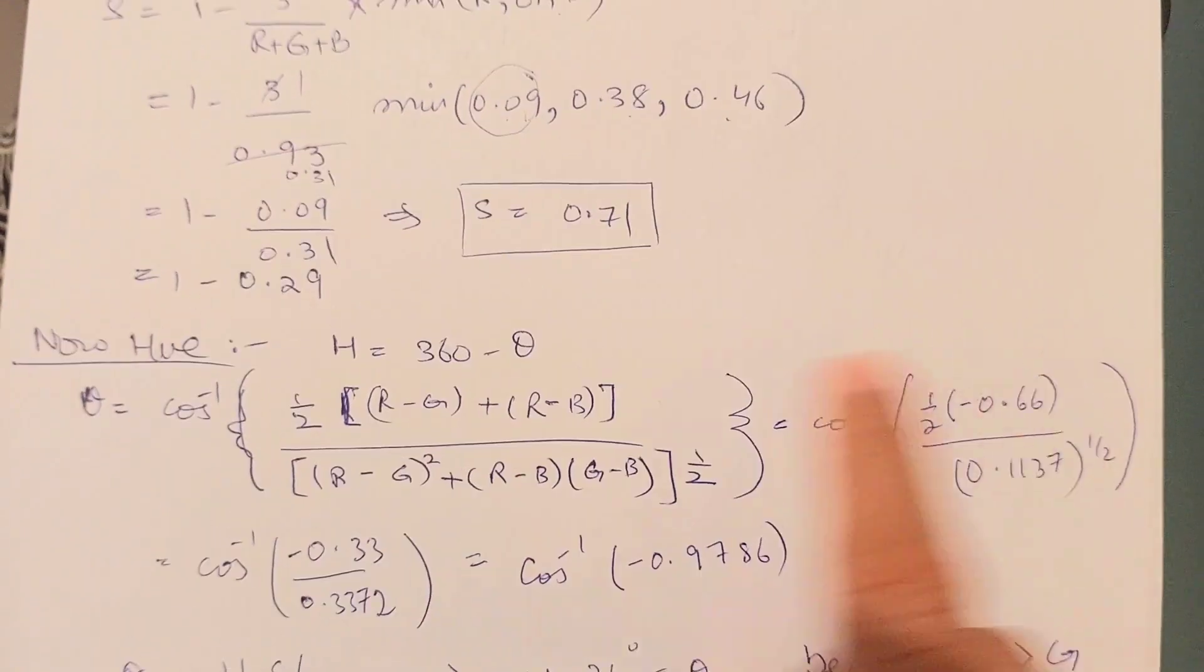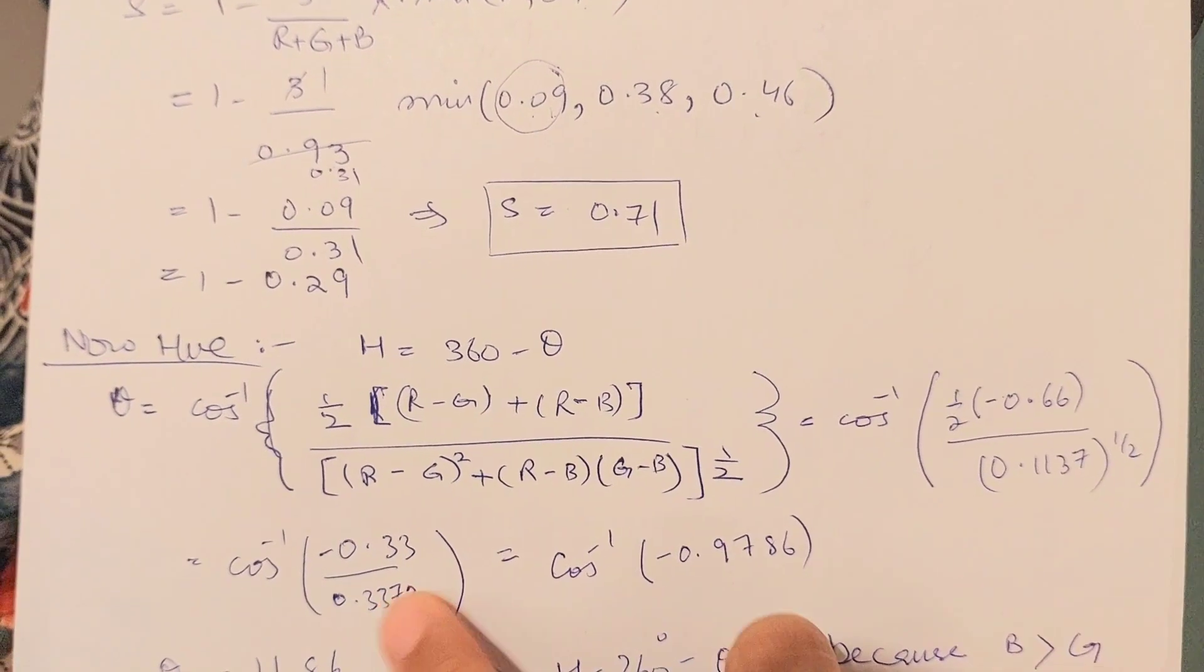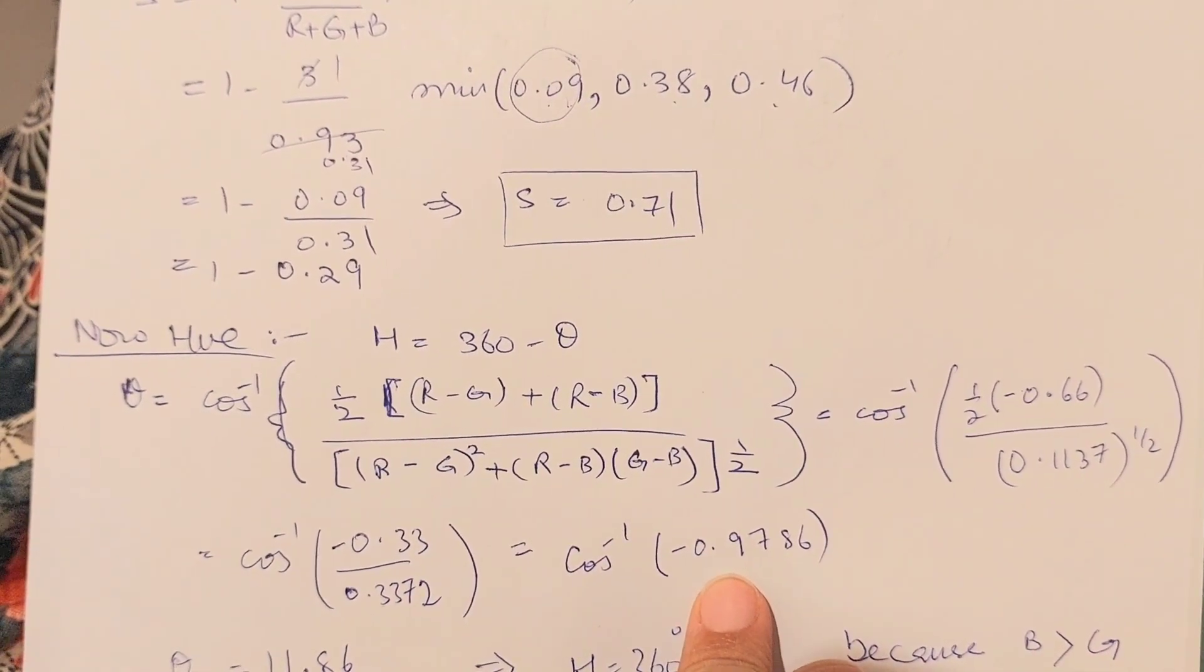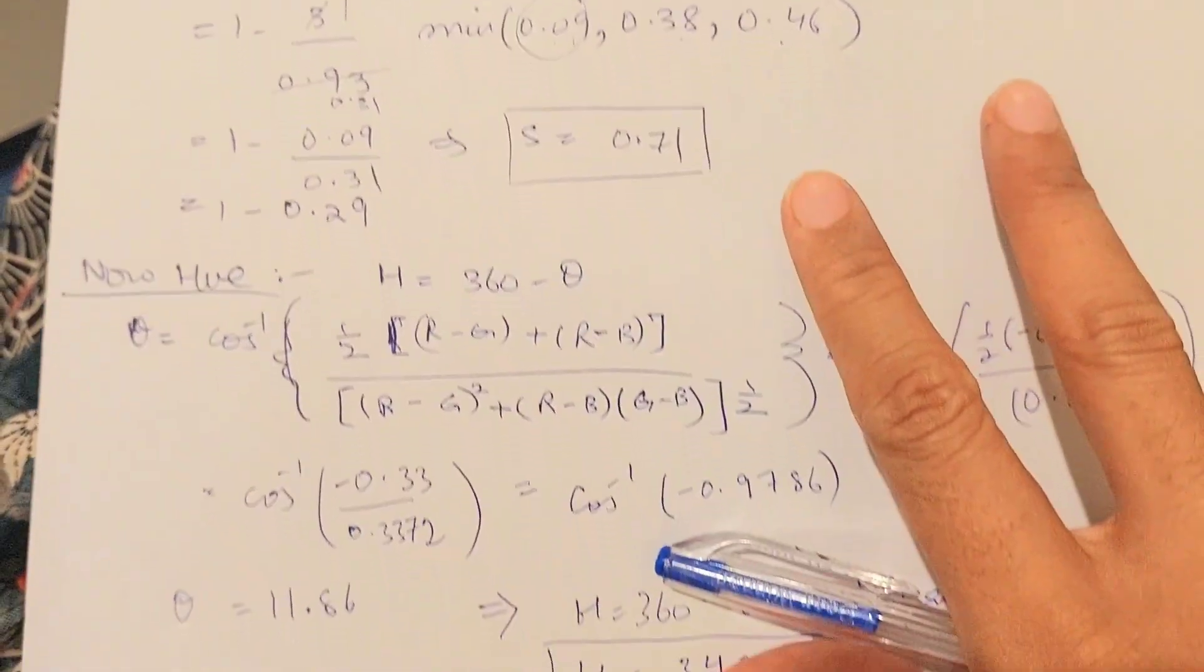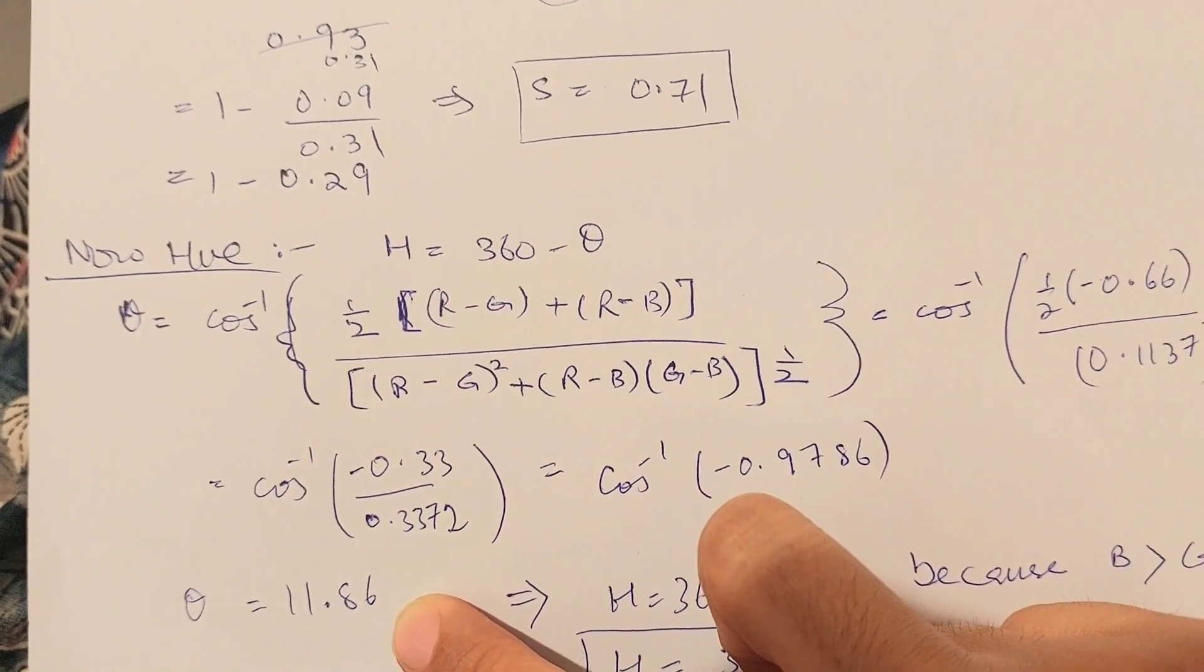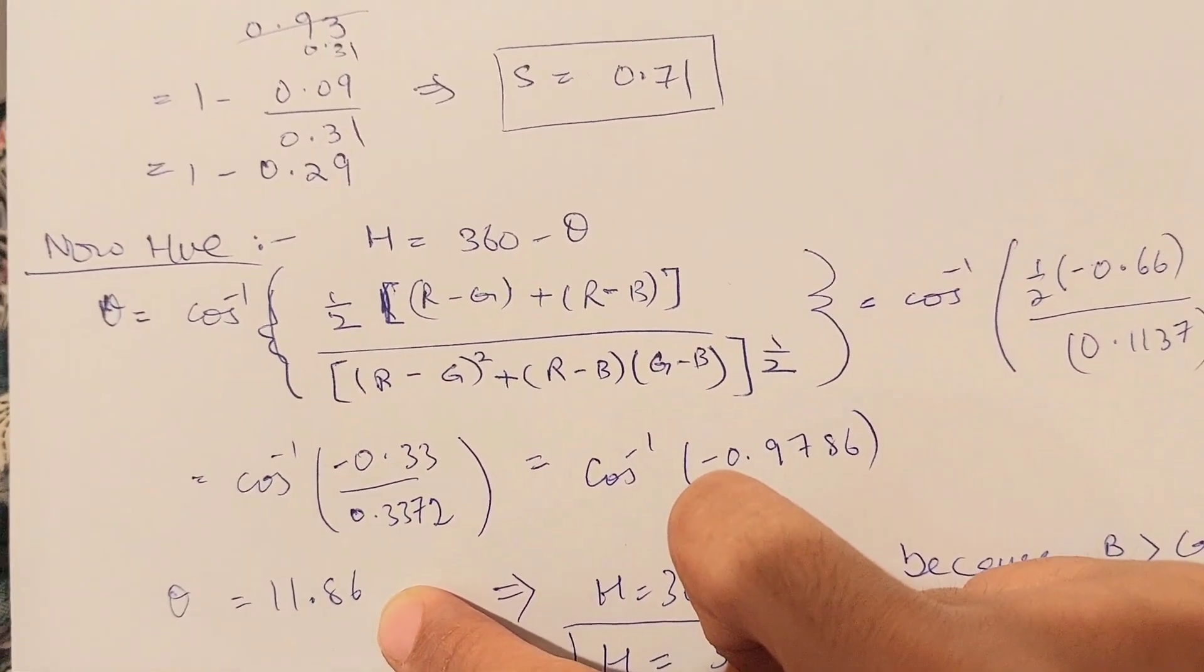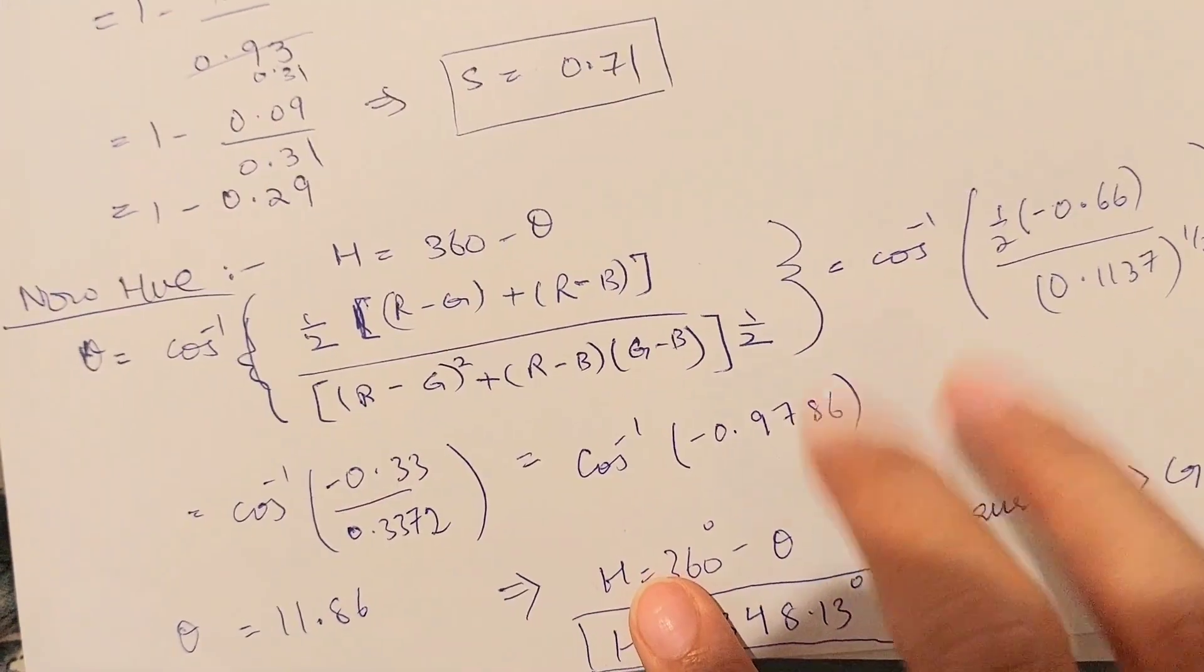This 0.1137 is written with a square root. In the next step, I have taken this square root, and in the numerator, I have divided this value by two. Once I divide these values, I get negative 0.9786. When I apply a cos inverse on this, I get 11.86.